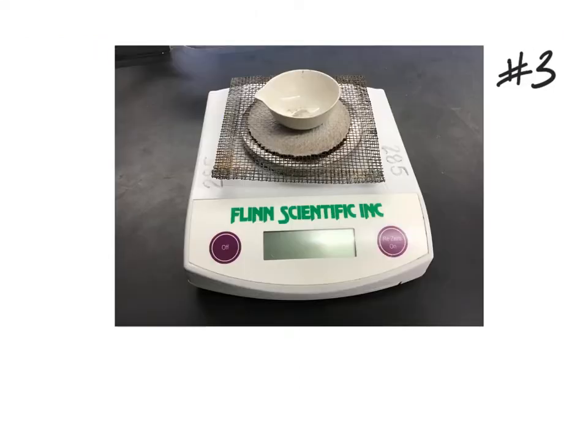The last thing I want to talk about with balances is this. Whenever you're placing a hot object on a balance make sure you always have this barrier. This is known as the wire gauze between the balance plate and the hot object. Make sure to zero out the balance with the gauze on it first so that way the mass of the gauze is included as a part of the zeroed out balance. Then put the warm object on top of the gauze to get an accurate mass.